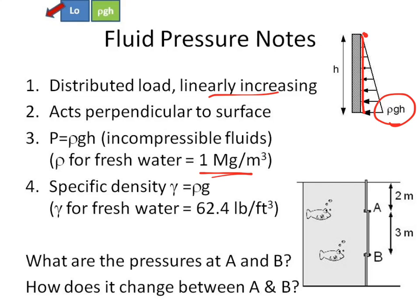You do need to know what these formulas are, what the numbers are. So density for fresh water is one megagram per meter cubed, or a thousand kilograms per meter cubed. Hint, remember that newtons are kilograms meters per second squared. Specific density is what we usually use for water. Gamma for fresh water is 62.4 pounds per feet cubed.